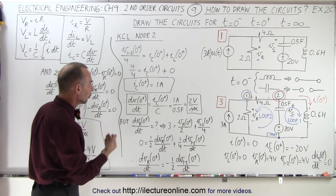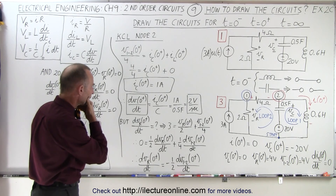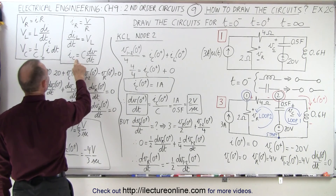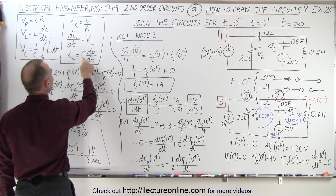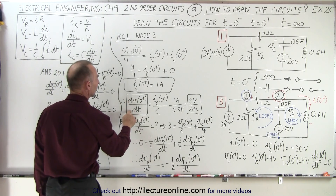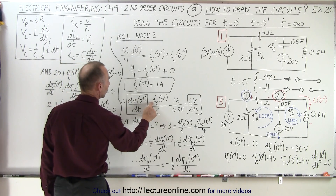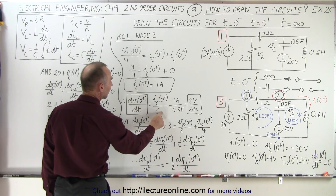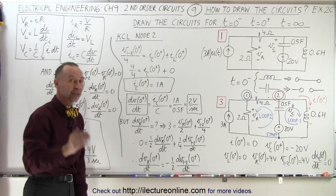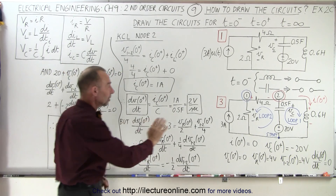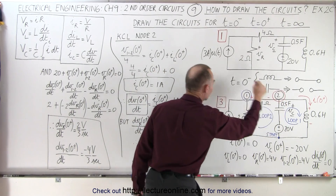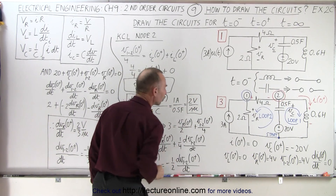Now we need to find the change in the voltage. Since we know the current through the capacitor, and that equals the capacitance times the change in voltage with respect to time, we get dV/dt across the capacitor equal to the current divided by the capacitance: 1 amp divided by 0.5 farad equals 2 volts per second. So at that very moment in time, as soon as the current source begins to activate, we'll have a change in voltage across the capacitor of 2 volts per second.